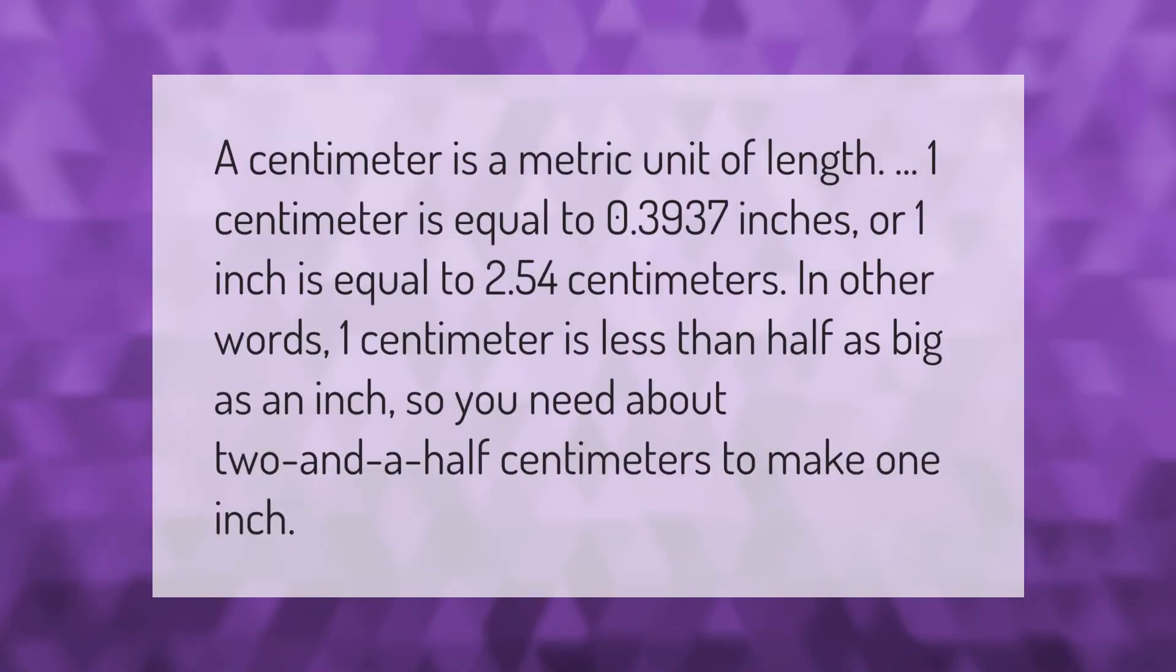A centimeter is a metric unit of length. One centimeter is equal to 0.3937 inches, or one inch is equal to 2.54 centimeters. In other words, one centimeter is less than half as big as an inch, so you need about two and a half centimeters to make one inch.